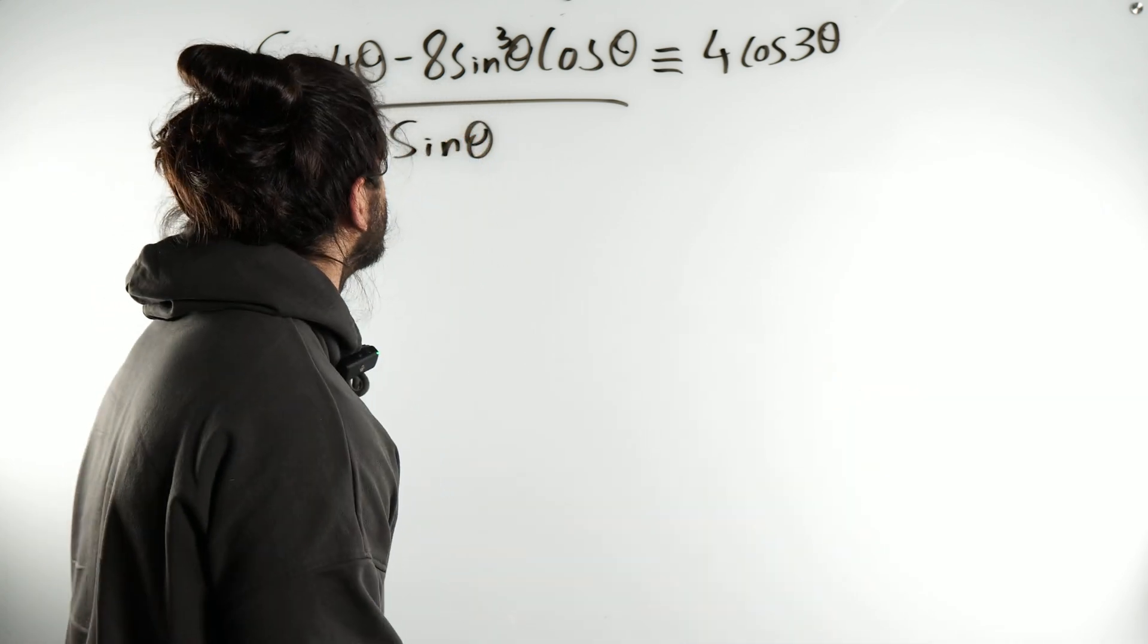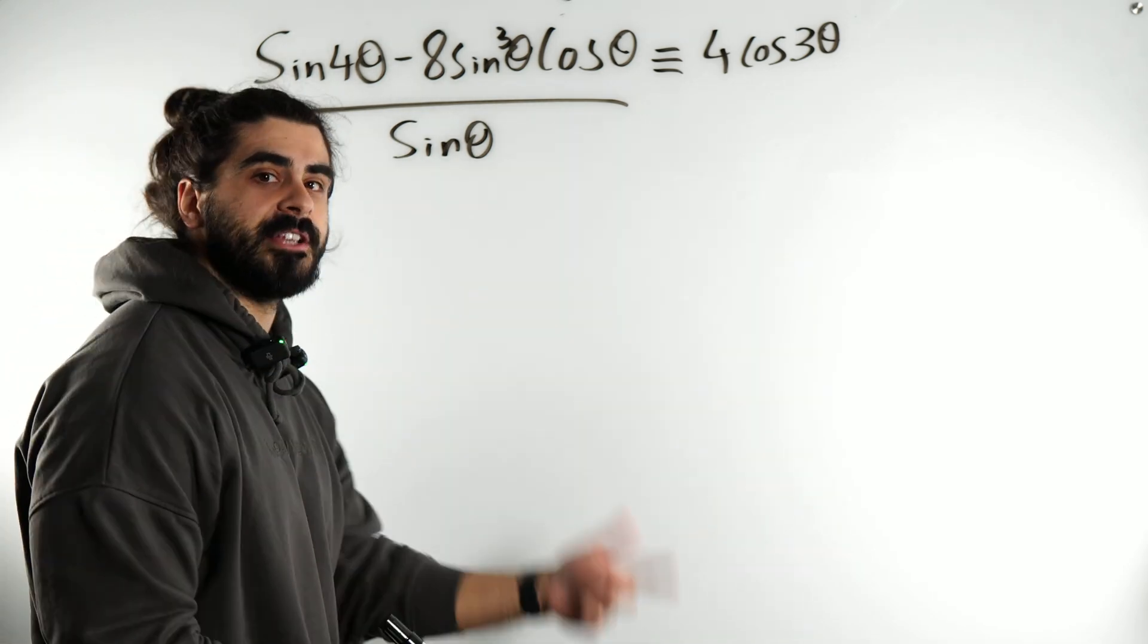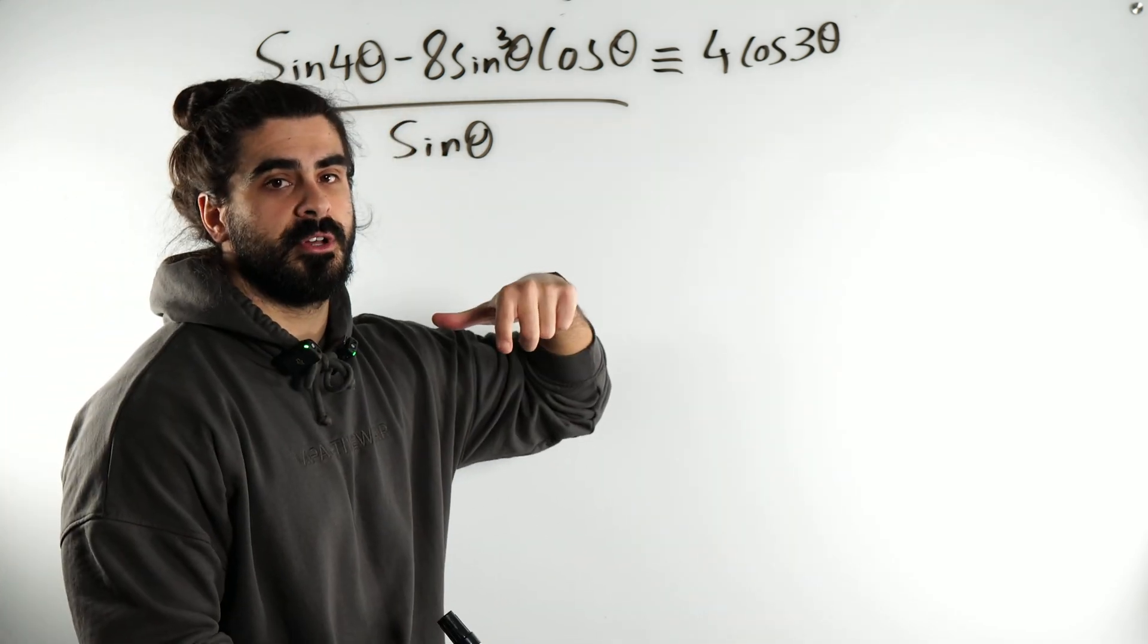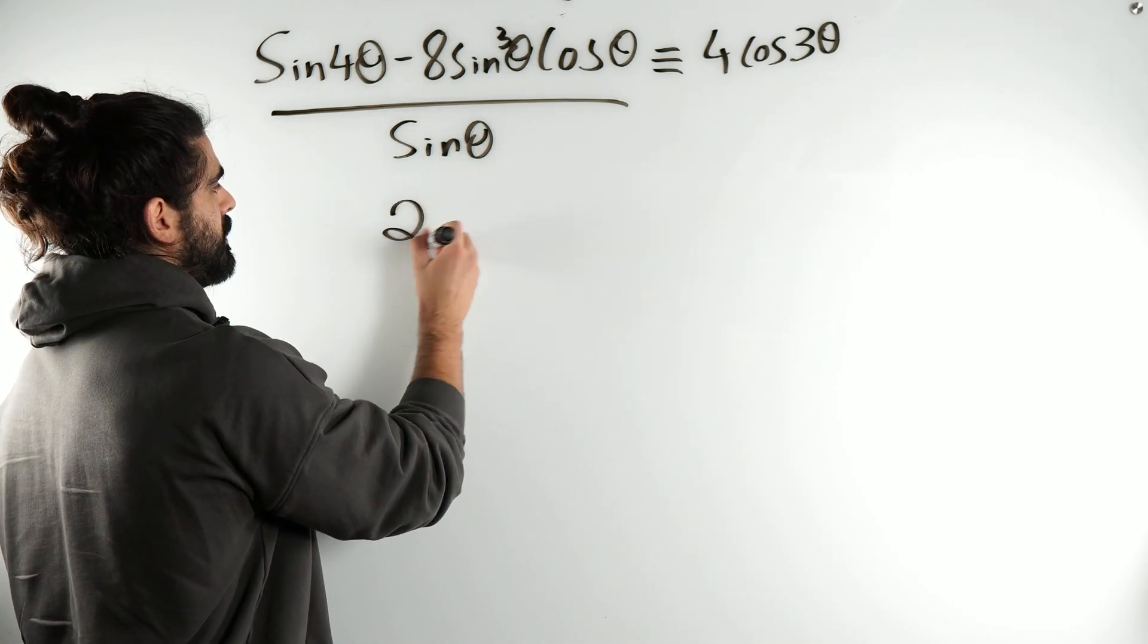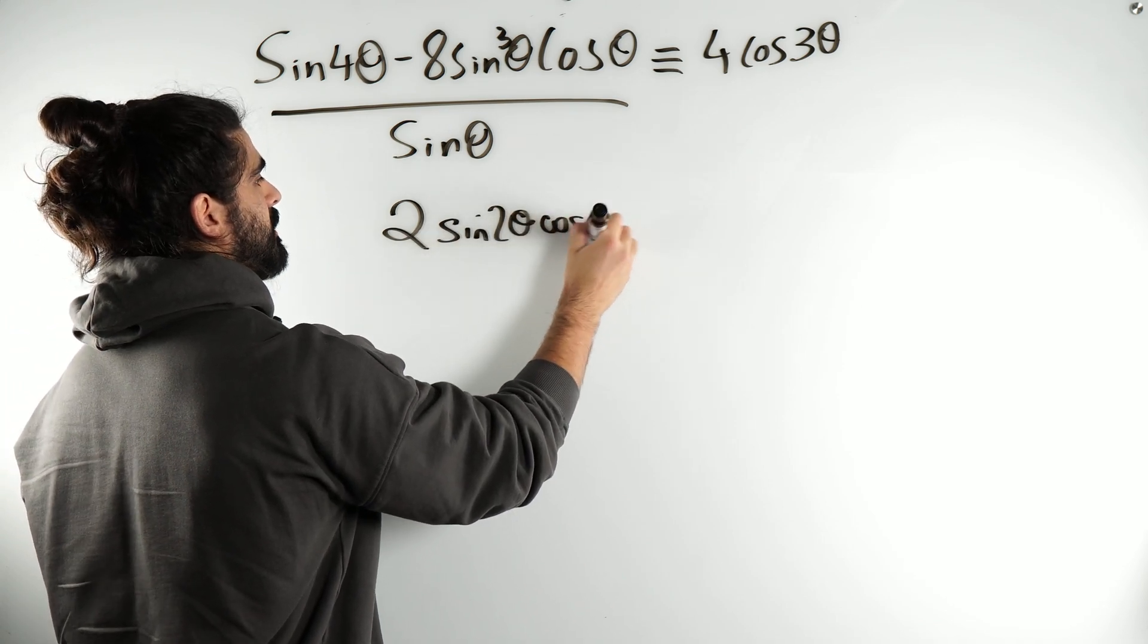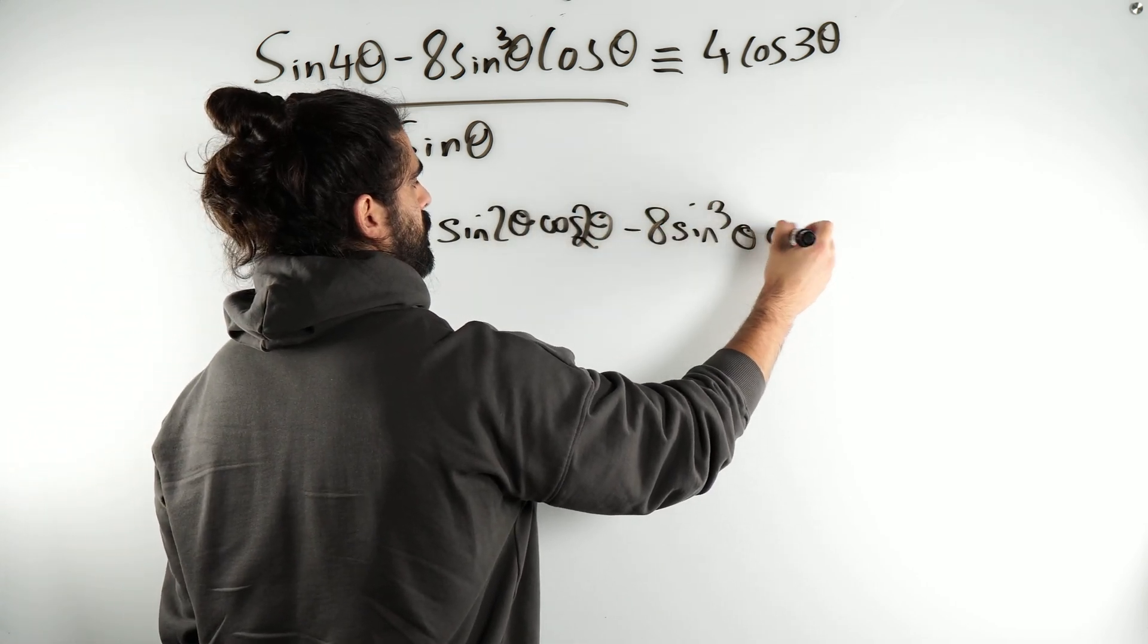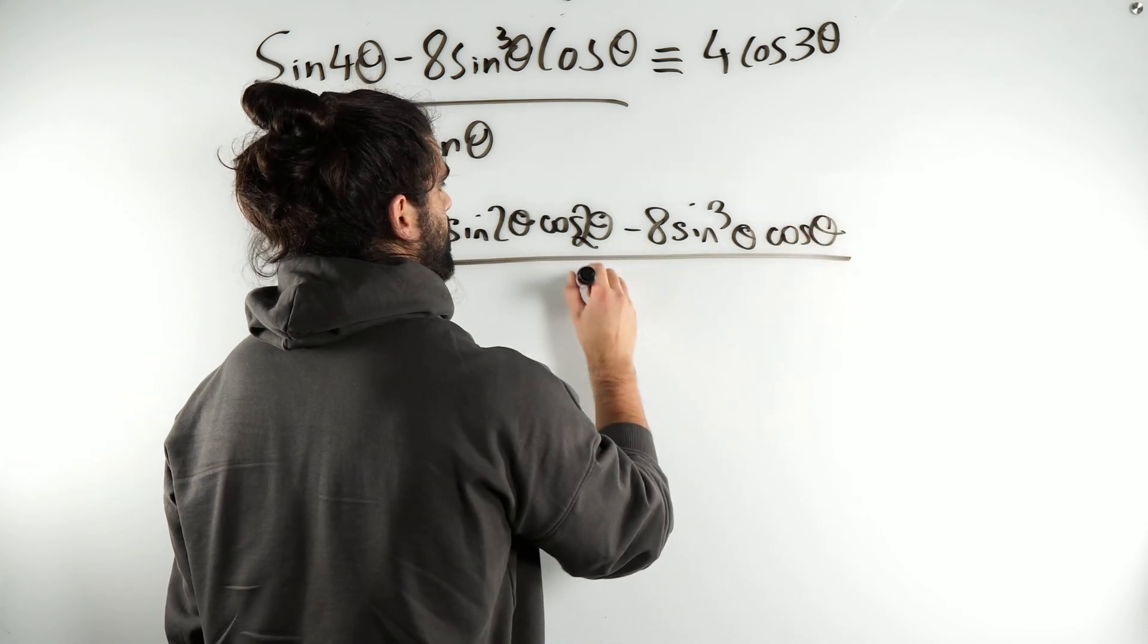The first thing I'm going to do is break down sine 4 theta. Now, remember sine 2 theta is 2 sine theta cos theta. So, if we have 4 theta, it's going to break down to 2 theta. So, this becomes 2 sine 2 theta cos 2 theta minus 8 sine cubed theta cos theta all over sine theta.